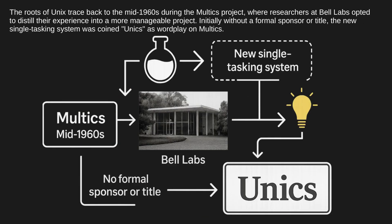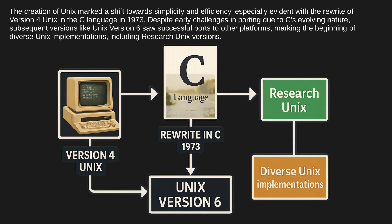The roots of Unix trace back to the mid-1960s during the Multics project, where researchers at Bell Labs opted to distill their experience into a more manageable project, initially without a formal sponsor or title. The new single-tasking system was coined 'Unix' as wordplay on 'Multics.' The rewrite of version 4 Unix in the C language in 1973 marked a shift towards simplicity and efficiency. Subsequent versions like Unix version 6 saw successful ports to other platforms, marking the beginning of diverse Unix implementations.